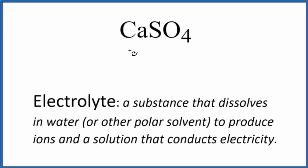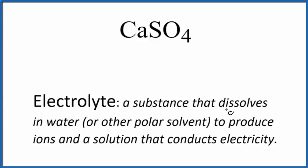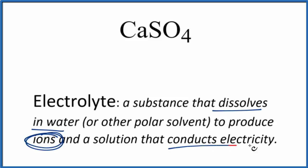In this video, we'll look at whether CaSO4 is an electrolyte or a non-electrolyte. This is calcium sulfate. The definition of electrolyte says that we have a substance that dissolves in water or another polar solvent, produces ions, and because we have these ions, the solution is going to conduct electricity.